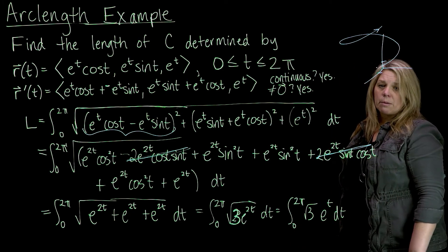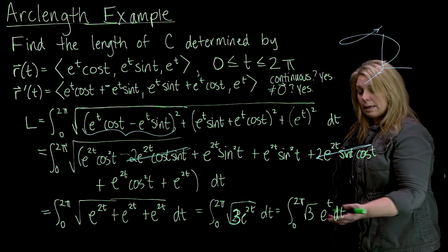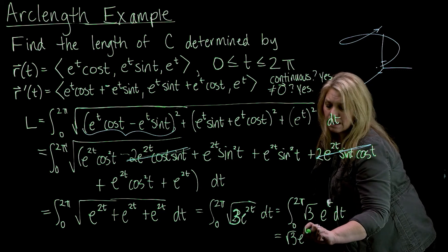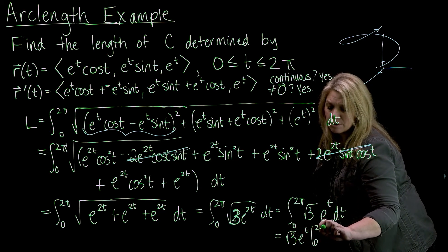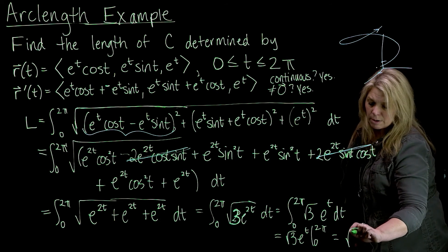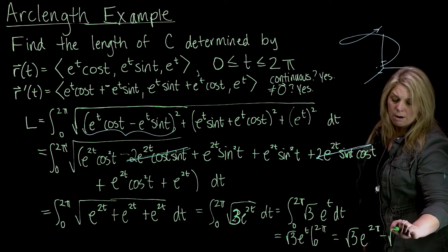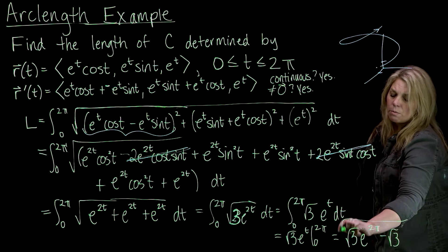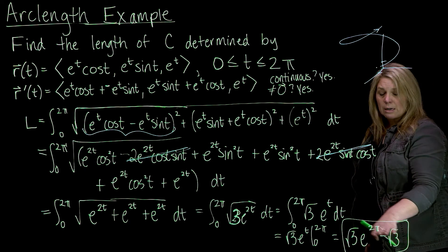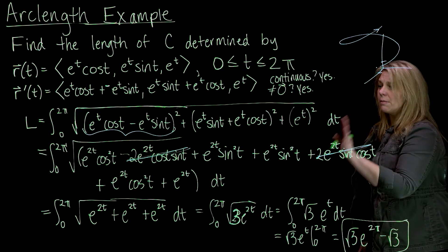That's easy to evaluate. The antiderivative is square root of 3 times e to the t, evaluated from 0 to 2 pi. Plugging in the limits gives square root of 3 times e to the 2 pi, minus square root of 3 times e to the 0, which is square root of 3 times e to the 2 pi minus square root of 3. Notice the answer is positive — as it should be, since it's a length. If you get a negative answer, something has gone wrong.